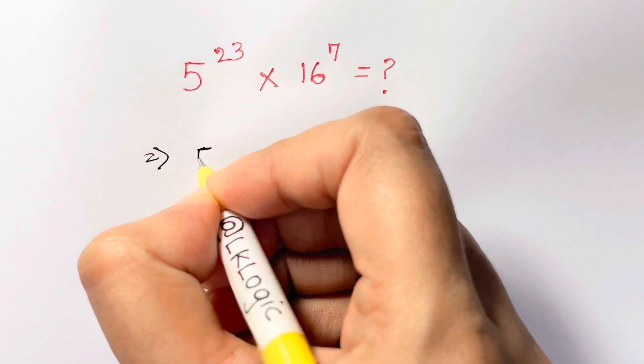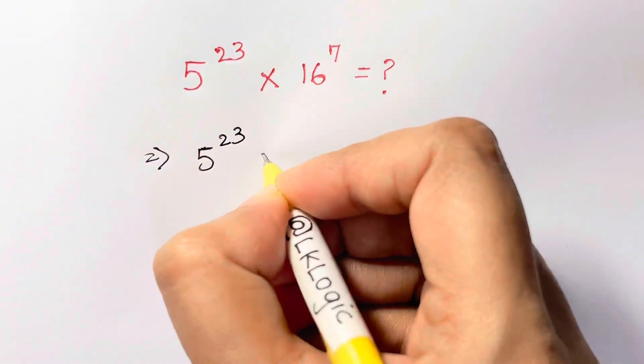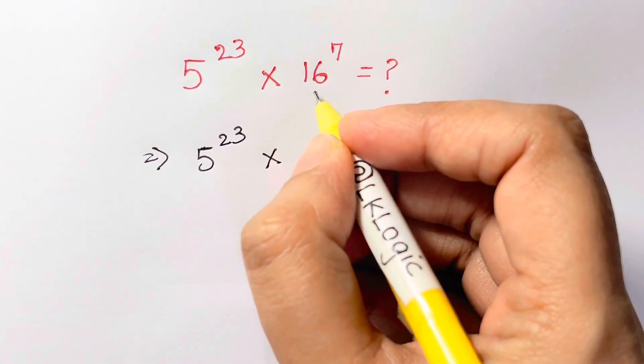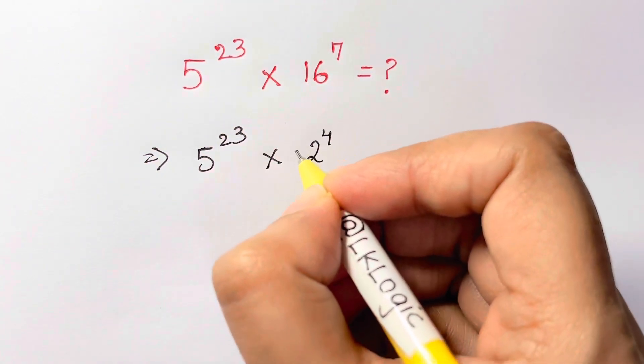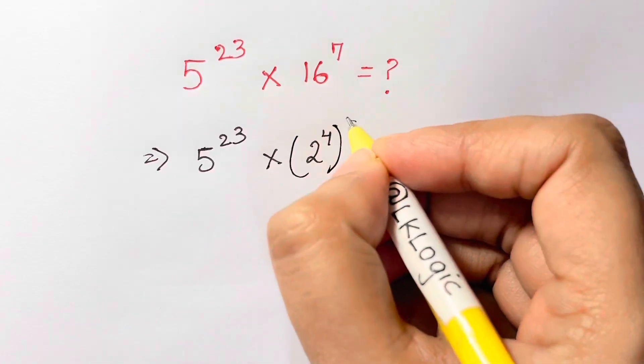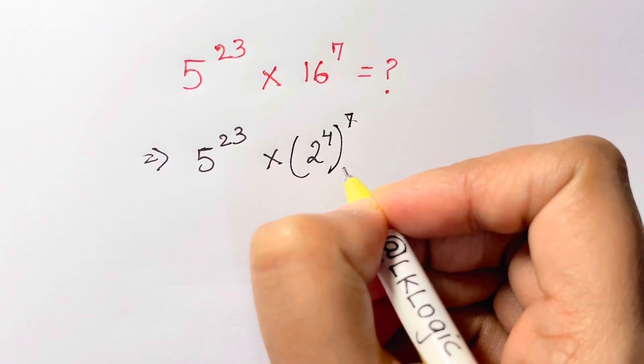Now here, the first step is to write down 5 to the 23 as it is. Then we're going to split 16, which can be written as 2 to the fourth—2 times 2 times 2 times 2—whole to the power of 7.